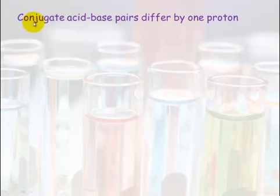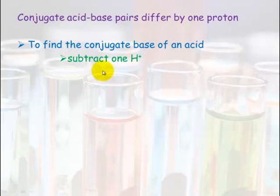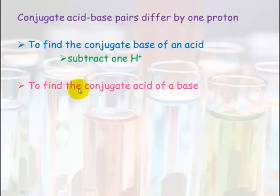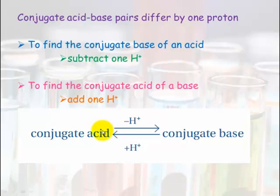In summary: conjugate acid-base pairs differ by one proton. To find the conjugate base of an acid, simply subtract one hydrogen ion. To find the conjugate acid of a base, add one hydrogen ion. So from a conjugate acid to the conjugate base, you remove a hydrogen ion, and from the conjugate base to the conjugate acid, you add a hydrogen ion. It's that simple.